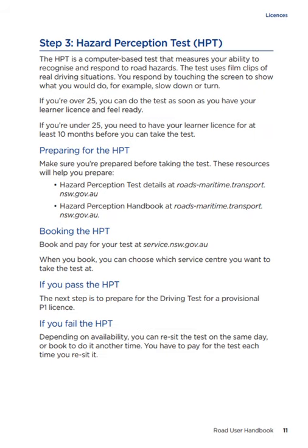Step 3: Hazard Perception Test. The HPT is a computer-based test that measures your ability to recognise and respond to road hazards. The test uses film clips of real driving situations. You respond by touching the screen to show what you would do — for example, slow down or turn. If you're over 25, you can do the test as soon as you have your learner licence and you feel ready. If you're under 25, you need to have your learner licence for at least 10 months before you can take the test.